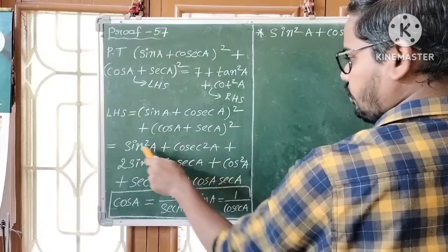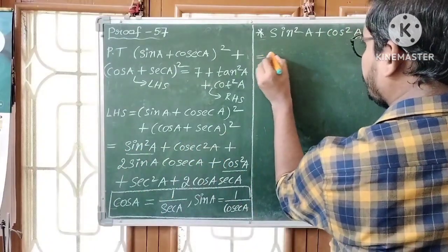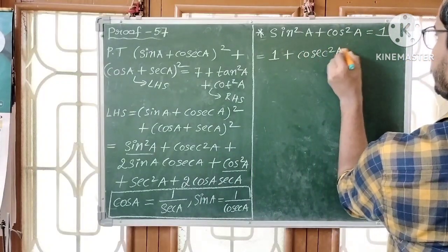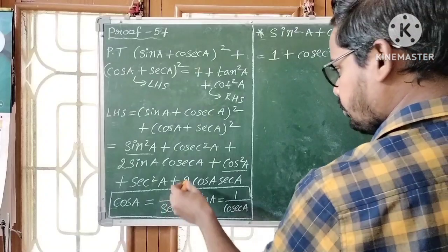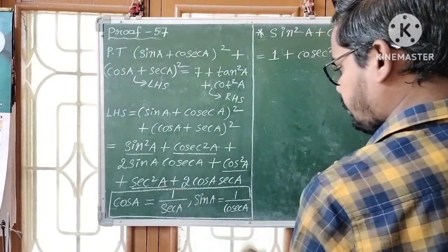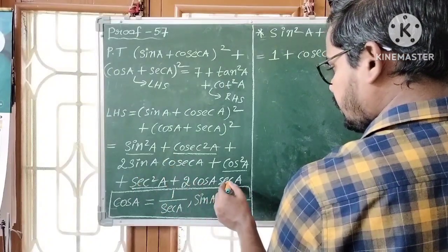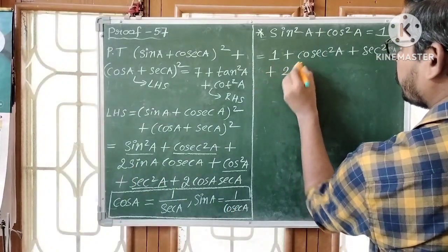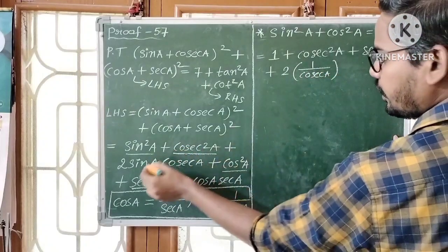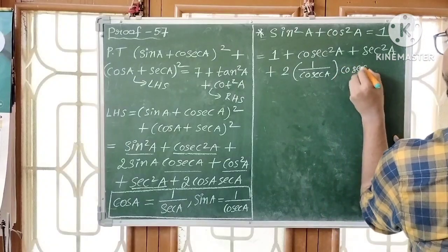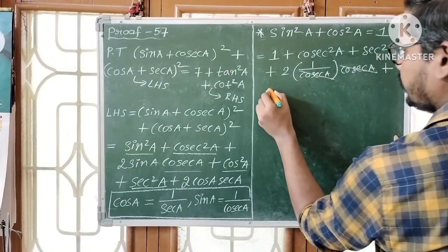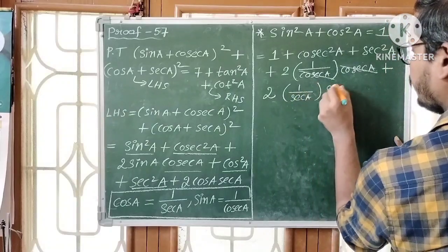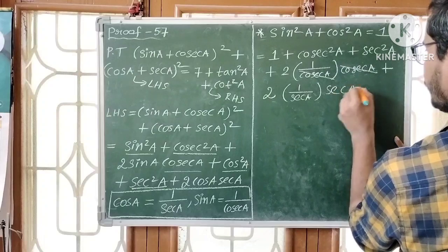So sin²a + cos²a = 1. That gives us 1, plus cosec²a plus sec²a from the squared terms. For the cross terms: 2·sin a·cosec a — since sin a = 1/cosec a, we write 2·(1/cosec a)·cosec a, so cosec a cancels giving 2. Similarly, 2·cos a·sec a — replacing cos a with 1/sec a gives 2·(1/sec a)·sec a, so sec a cancels giving 2.